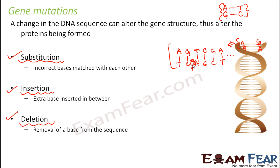Similarly, there can be a deletion. Instead of inserting, if we delete one base, then T will try to pair up with something else — since A is not there, it might pair with G, and C will try to pair with C. This again causes an entire mess and impacts protein synthesis. Especially, insertion and deletion can even be fatal, because they can bring about major changes — the organism might not be able to survive with those kind of changes.